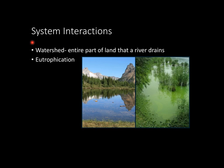Now let's look at system interactions. A pretty general concept is something known as the watershed. The watershed is basically the entire part of land that a river drains on. Moving on, another incredibly important topic to environmental science is eutrophication.